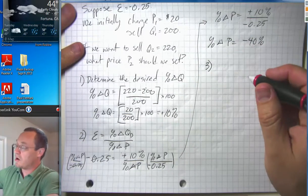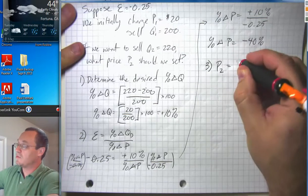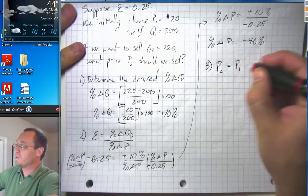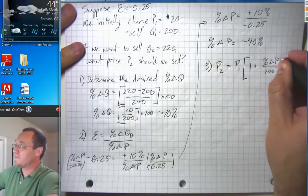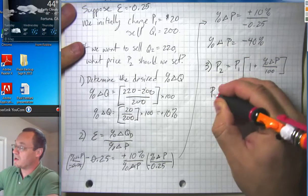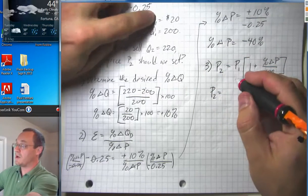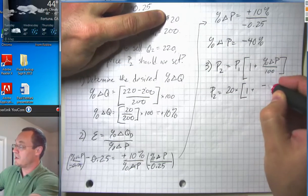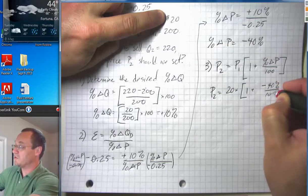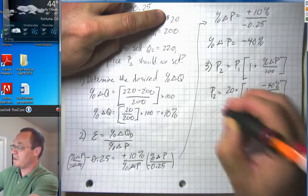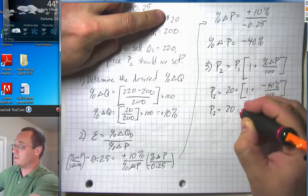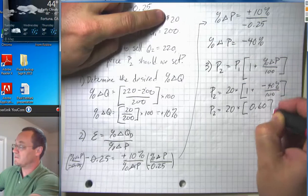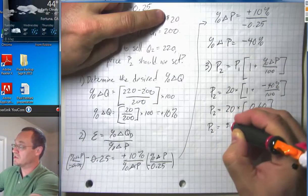So our new price P2 would equal our old price P1 times one plus the percent change in price over 100. So our new price P2 would equal our old price $20 times 1 plus negative 40 percent over 100, or P2 equals $20 times 0.6, or P2 equals $12.